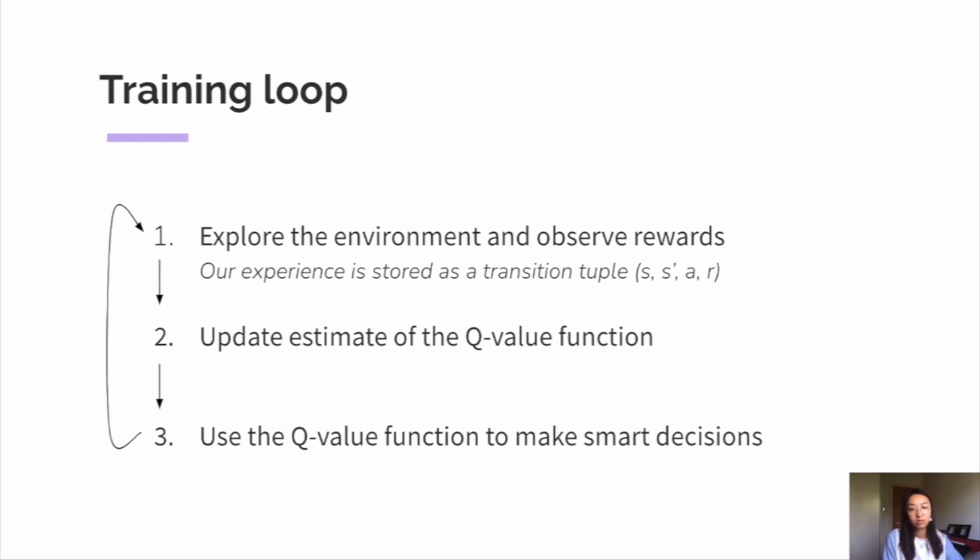For example, our state could include GPS coordinates. And in this case, it's really common to utilize deep reinforcement learning to solve the problem.